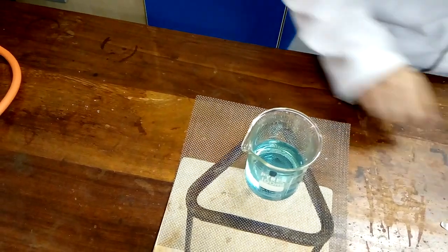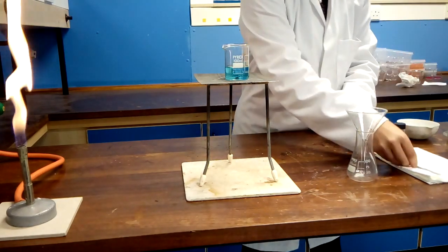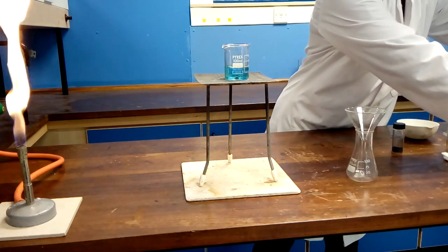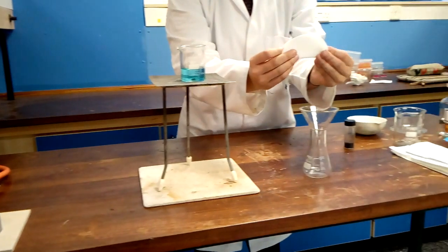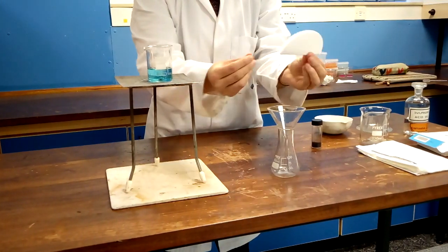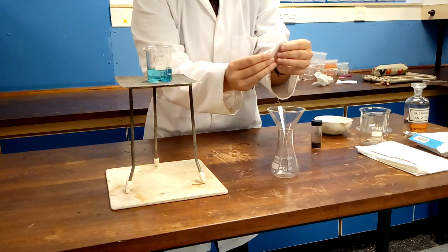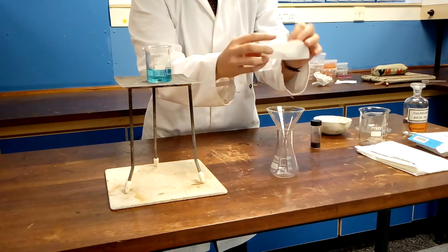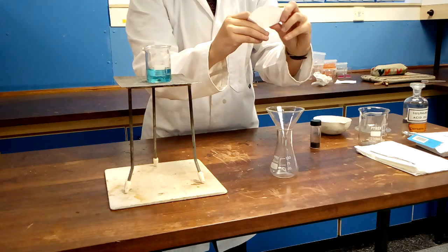To remove the unreacted copper oxide you will have to filter the solution. While you're leaving your apparatus to cool you can set up the filtration. For this you'll need your filter funnel and conical flask. Fold the filter paper into half and then quarters. Adjust to a cone shape to fit the funnel.